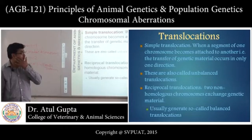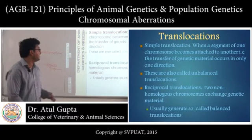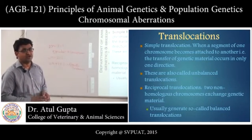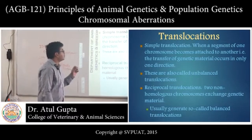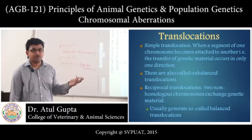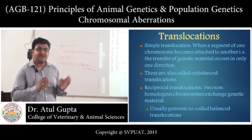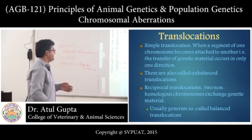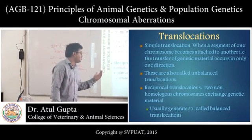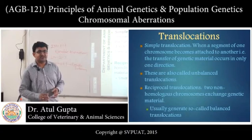Now we will see translocations, which are of three types: simple, reciprocal, and Robertsonian. Translocation is a process in which exchange of genetic material occurs between non-homologous chromosomes. In simple translocation, a segment of one chromosome becomes attached to another chromosome — genetic material is transferred in one direction only, with a single break, and these are called unbalanced translocations. In reciprocal translocation, two non-homologous chromosomes exchange genetic material, generating balanced translocations.